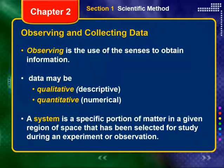Experimenting involves carrying out a procedure under controlled conditions to make observations and collect data. To learn more about matter, chemists study systems. A system is a specific portion of matter in a given region of space that has been selected for study during an experiment or observation. When you observe a reaction in a test tube, the test tube and its contents form a system.